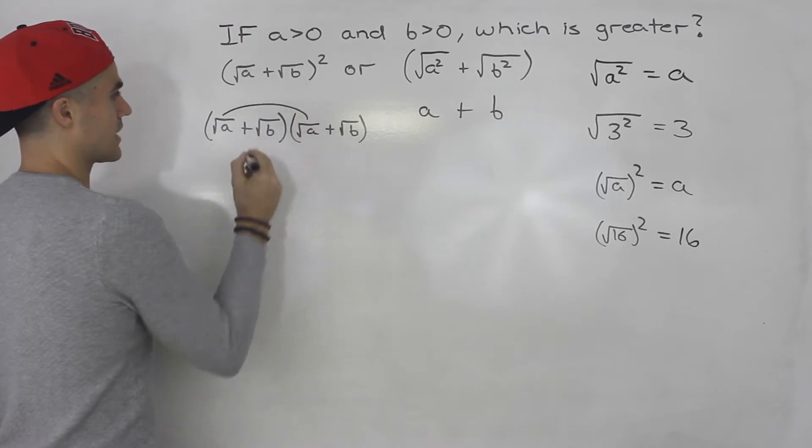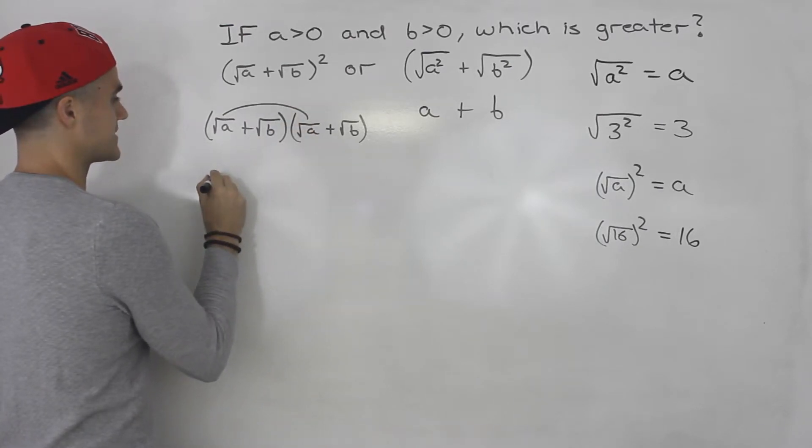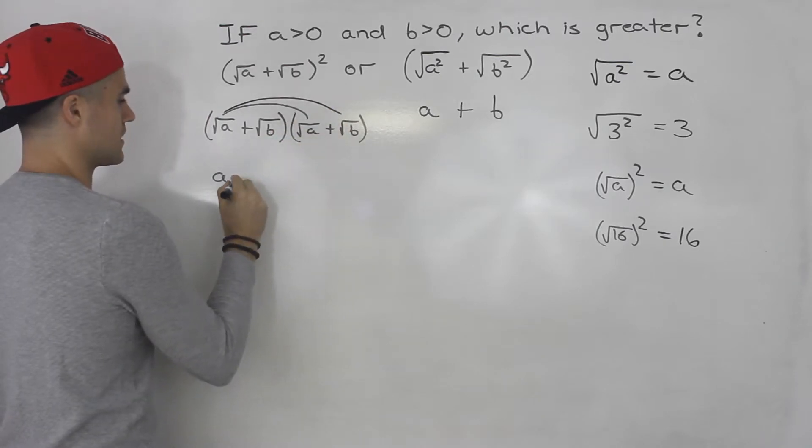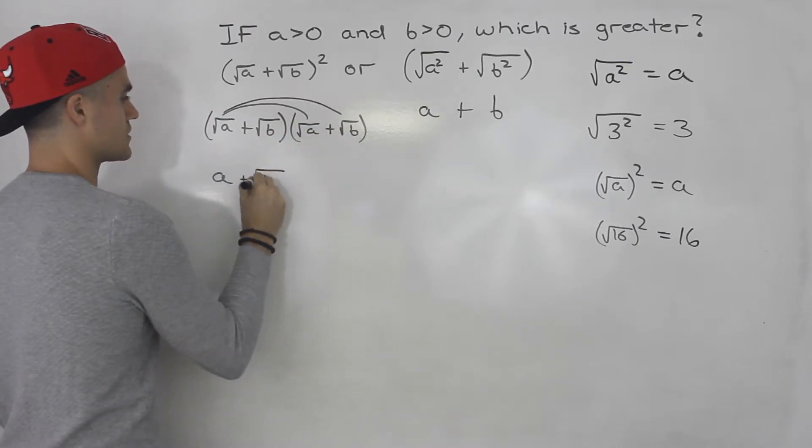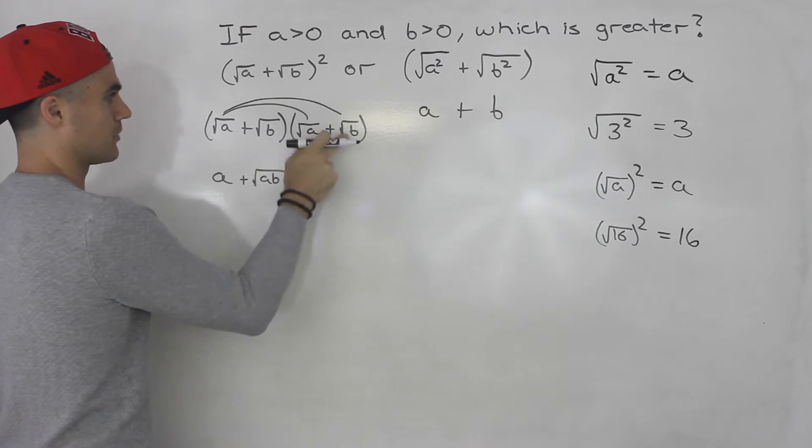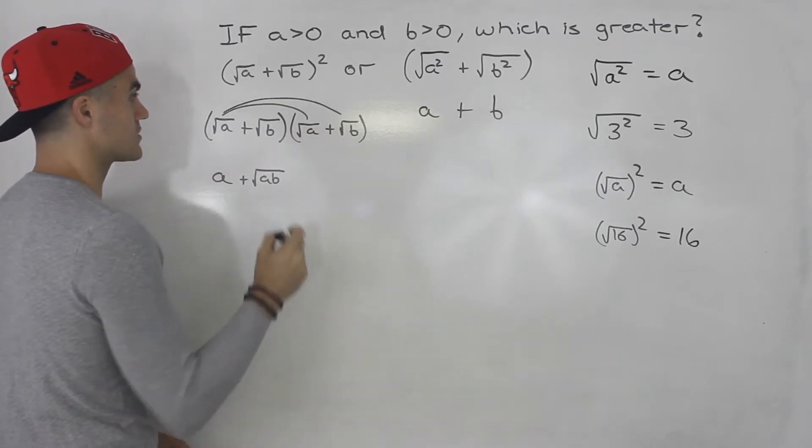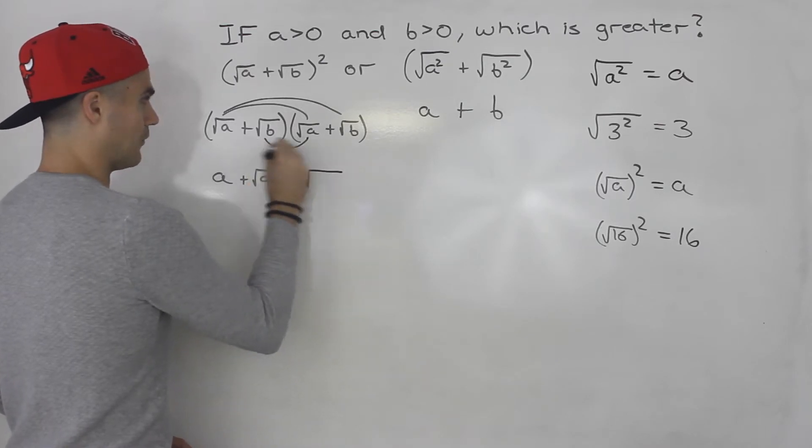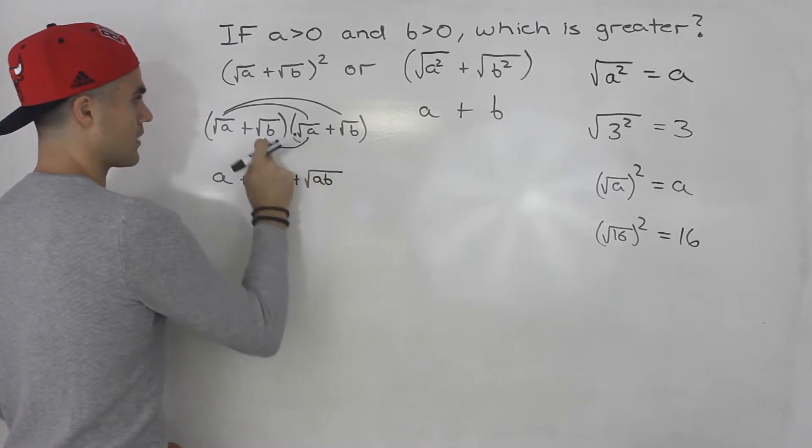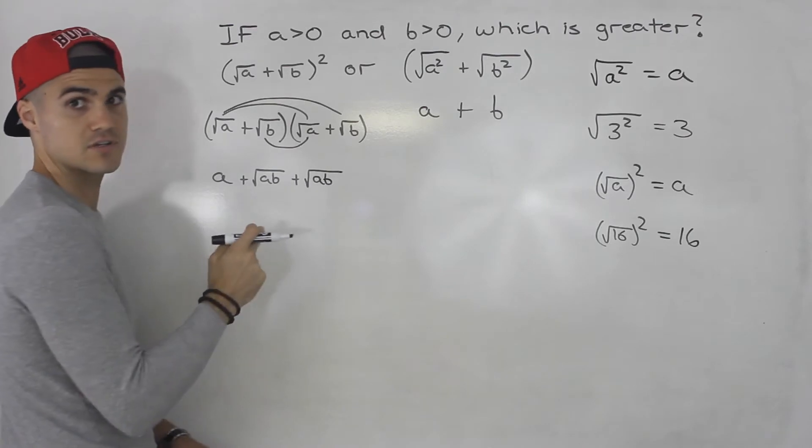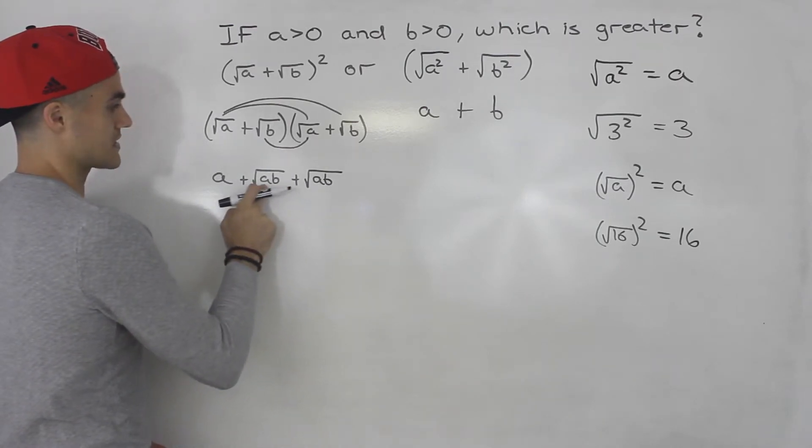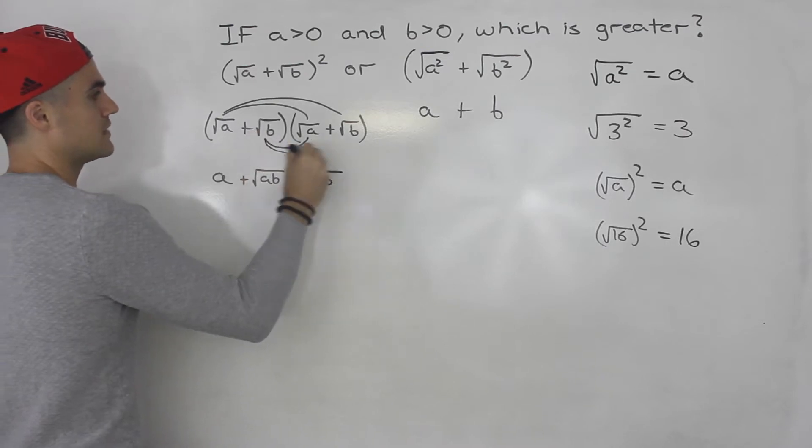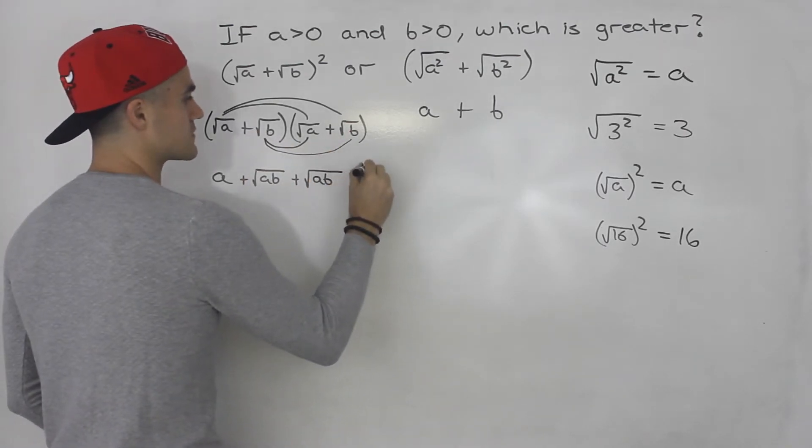So we'll have root a plus root b times root a plus root b. So root a times root a, we know that that's equal to a. Root a times root b is just root ab. You can multiply whatever's inside the radicals when you're multiplying radicals. Same thing here, that would be root ab. Root ba and root ab, those are the same thing. So I'm going to write it in the same order as here because these are going to be like terms. And then root b times root b, that just gives us b.